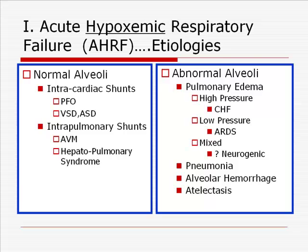Intracardiac shunts, such as a patent foramen ovale, VSDs, or ASDs can lead to intracardiac shunting and severe refractory hypoxemic respiratory failure, as can intrapulmonary shunts, such as those associated with arteriovenous malformations, or which can be seen in patients with hepatopulmonary syndrome.